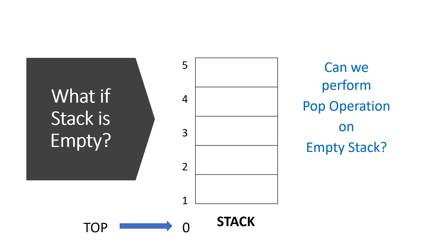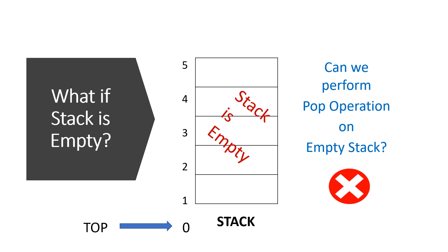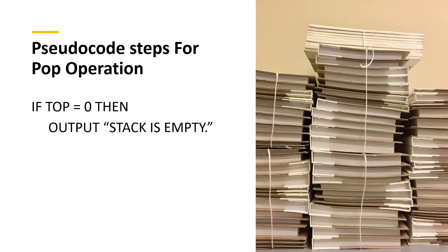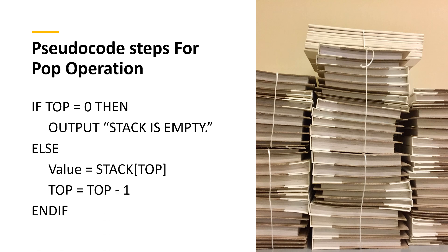Can we perform a pop operation on an empty stack? No, we can't. As there are no elements present in the stack to remove, if top is 0, the stack is empty and we cannot perform a pop operation. For the pop pseudocode steps: if top is 0, it means there are no elements to remove, so display the message 'stack is empty'. Else, store the element pointed by top in a variable and decrement top by one.